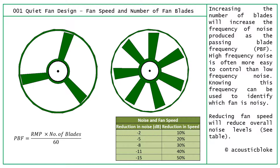The blade passing frequency is calculated by taking the RPM — the speed of the fan — multiplying that by the number of blades, and then dividing by 60. By adding more blades we shift the frequency from low to higher; by removing blades the frequency goes down.